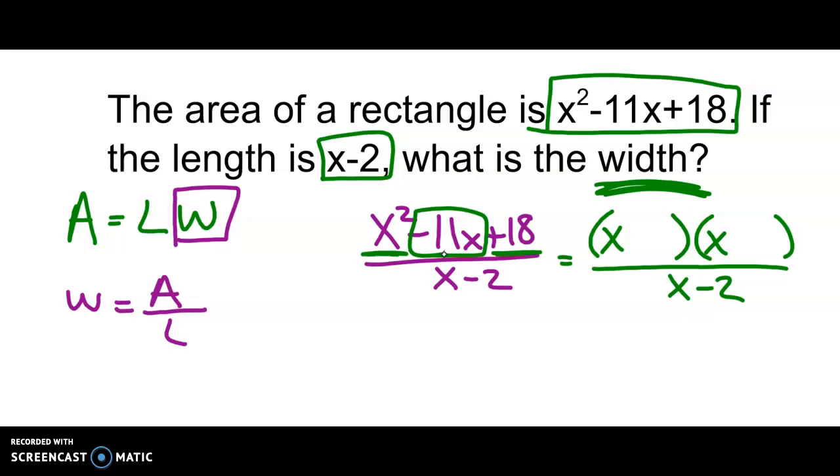Now if they're multiplying to be positive 18, then it's going to be a negative times a negative or a positive times a positive. In this case to get a negative 11 it will be negative.